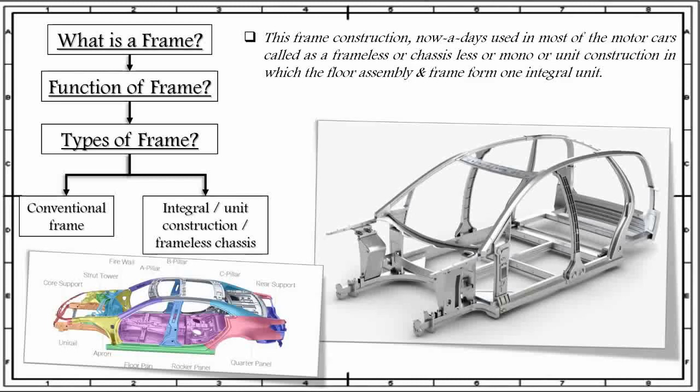In this type of construction, heavy side members used in conventional frame construction are eliminated, and the floor is strengthened by cross members and the body, all welded together.